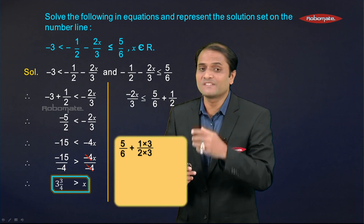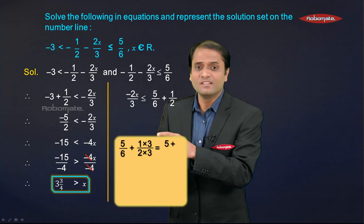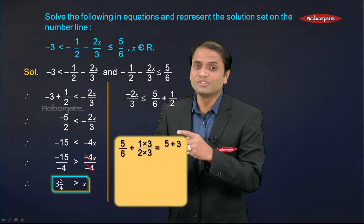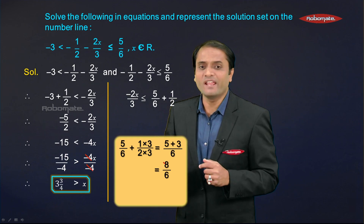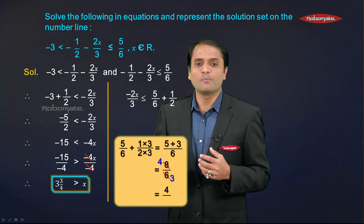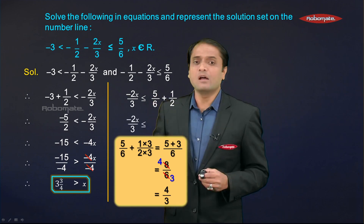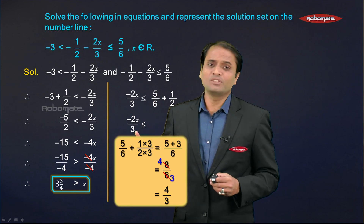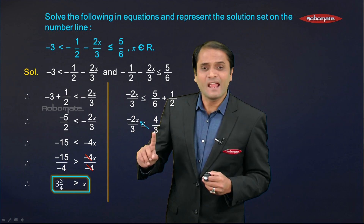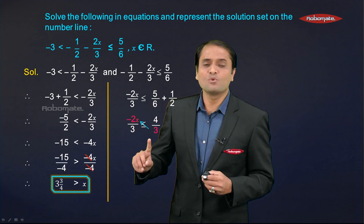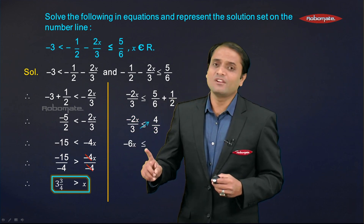Multiplying gives 3/6, so the RHS becomes (5 + 3)/6 = 8/6 = 4/3. Now we have −2x/3 ≤ 4/3. Cross-multiplying: −2x × 3 = −6x on the LHS, and 3 × 4 = 12 on the RHS, giving −6x ≤ 12.